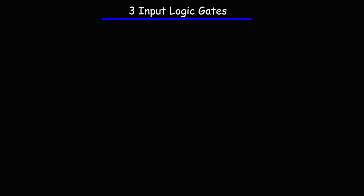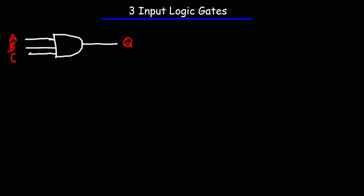In this video we're going to talk about three-input logic gates. The first one we're going to talk about is the three-input NAND gate. Here's the symbol for it — we'll call the three inputs A, B, and C, and the output we'll call Q. We're going to write up a truth table for this three-input NAND gate.